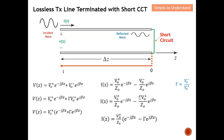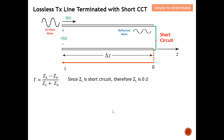Cross-multiplying, V-o-minus equals the reflection coefficient multiplied by V-o-plus. The next step is to replace V-o-minus with the reflection coefficient times V-o-plus. The common factor is V-o-plus here, and V-o-plus over Z-naught there, so I take the common factor and rearrange these two sets of equations. I have also derived the reflection coefficient equal to Z-L minus Z-naught over Z-L plus Z-naught.